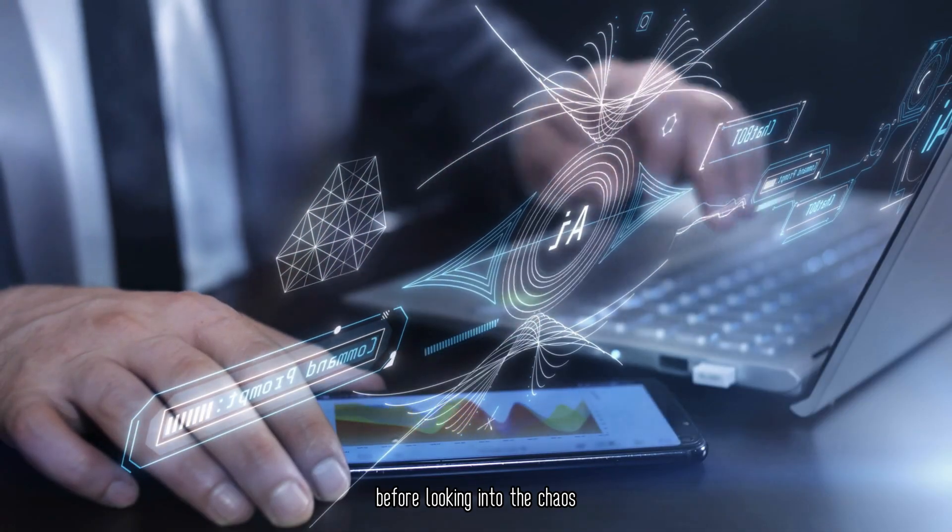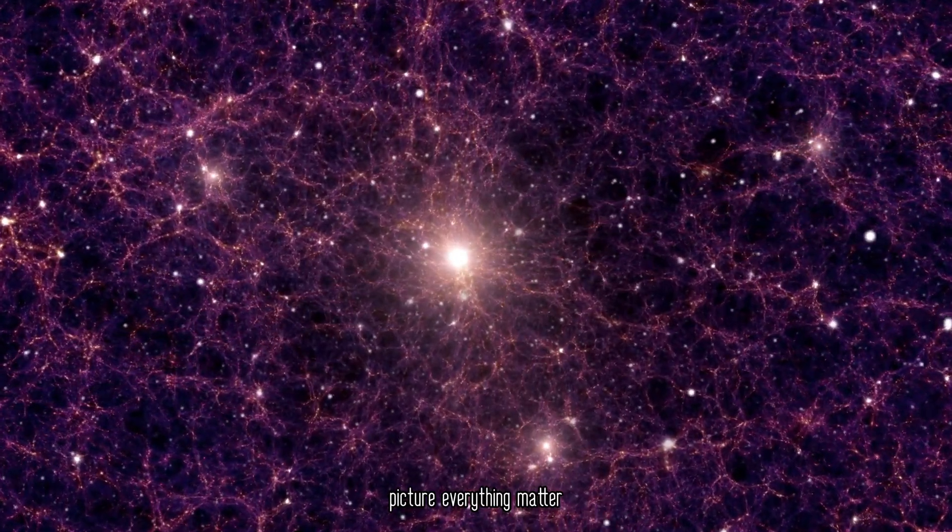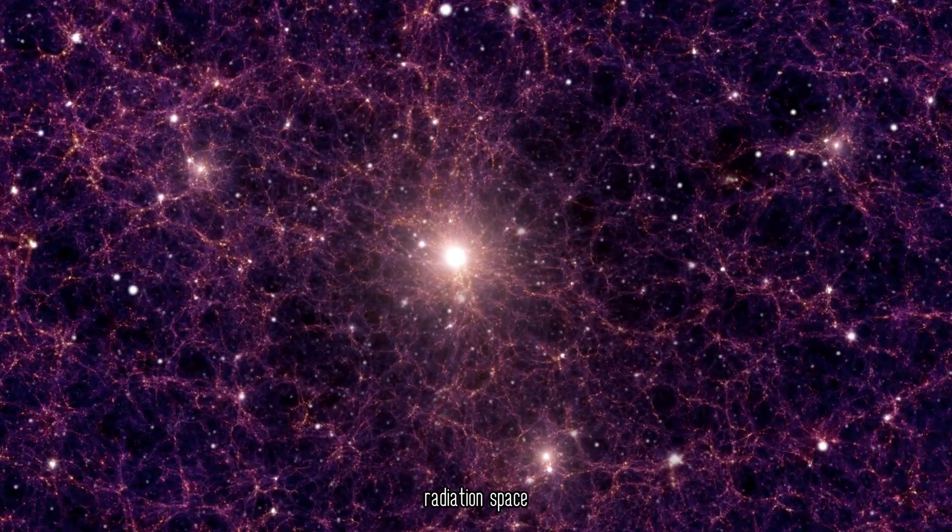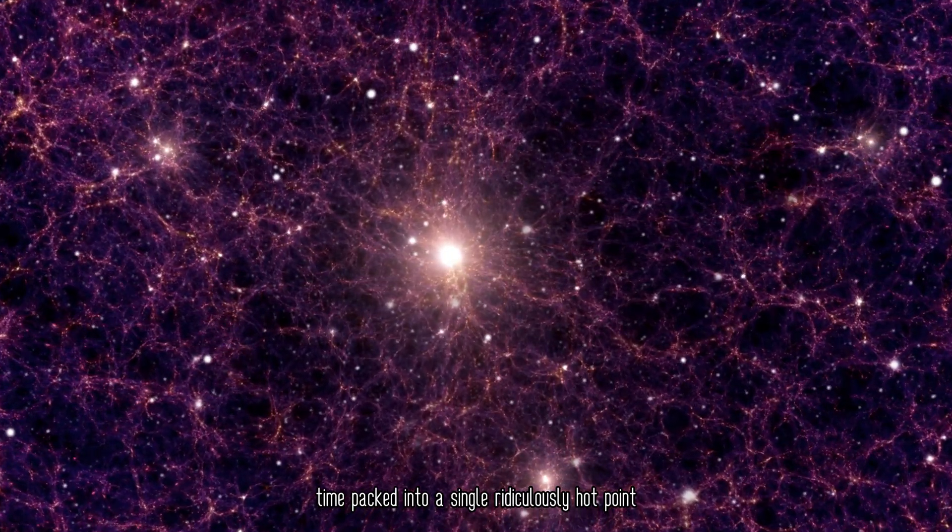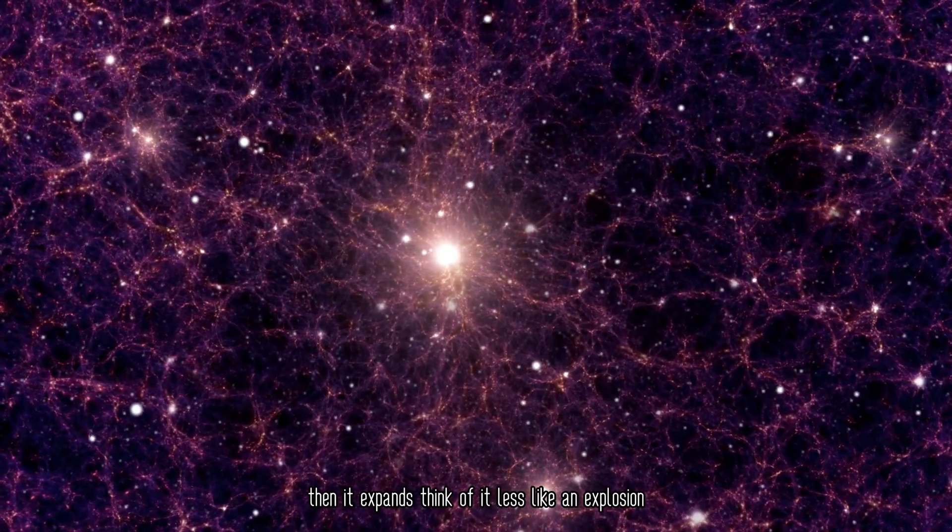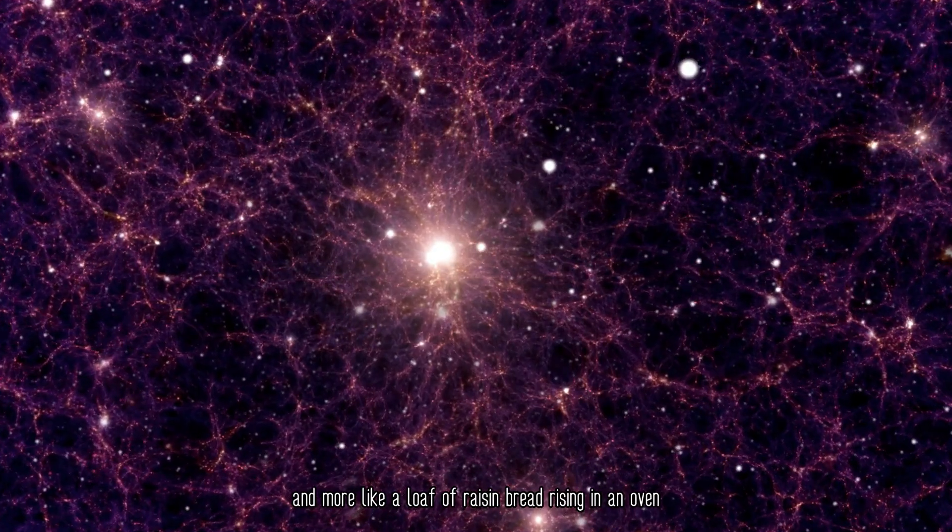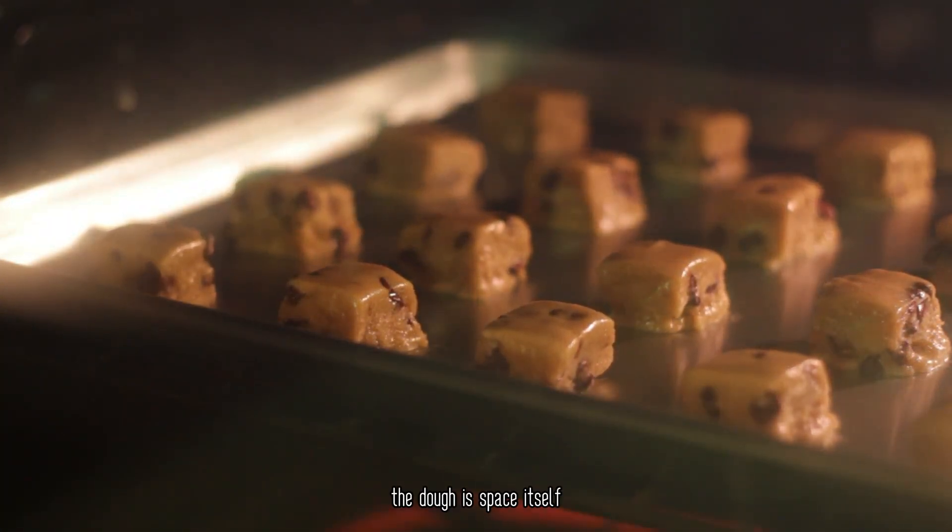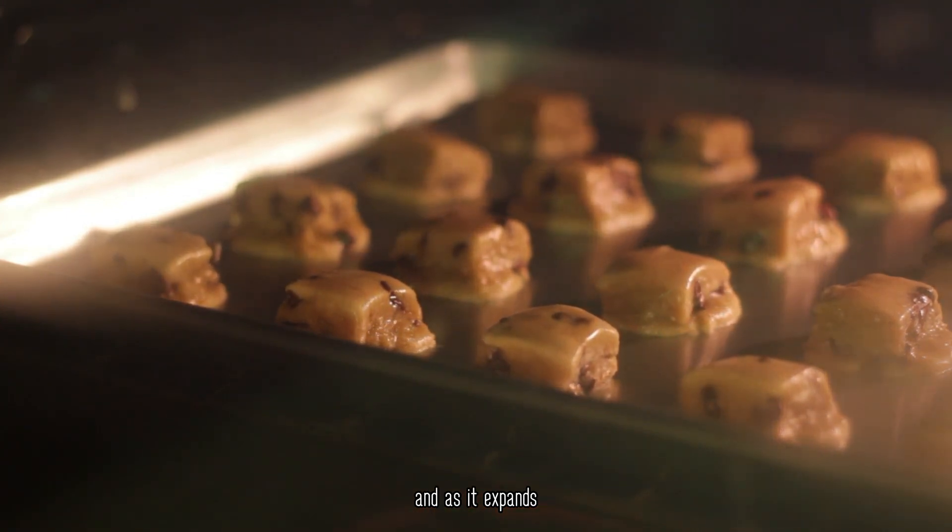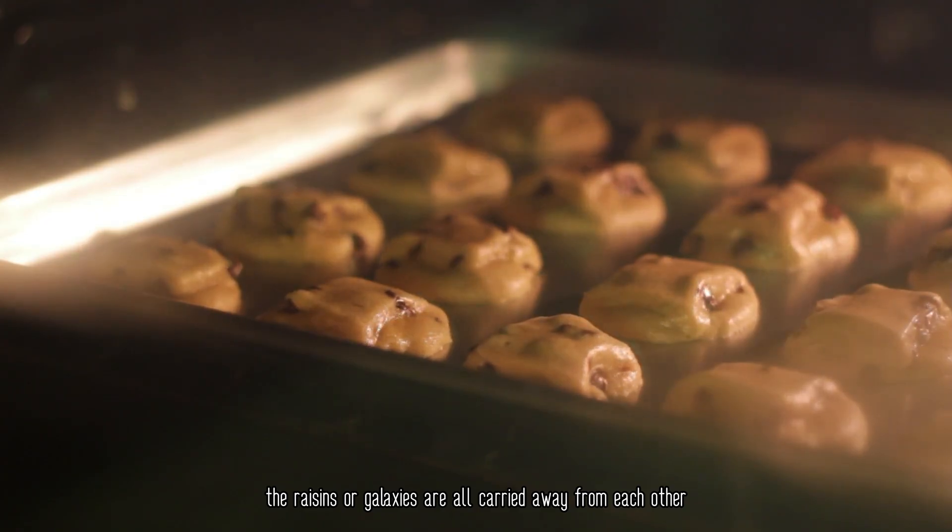Before looking into the chaos, we have to understand the order it threatens. Picture everything—matter, radiation, space, time—packed into a single, ridiculously hot point. Then it expands. Think of it less like an explosion and more like a loaf of raisin bread rising in an oven. The dough is space itself, and as it expands, the raisins, or galaxies, are all carried away from each other.